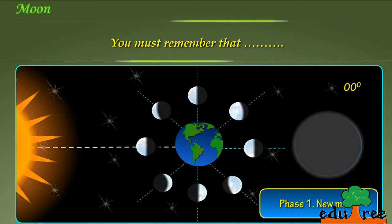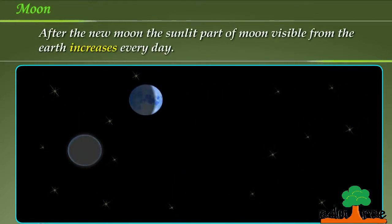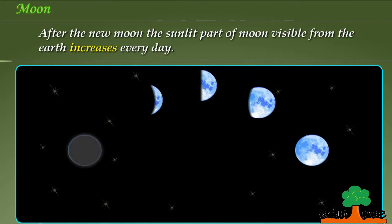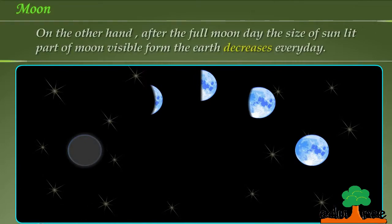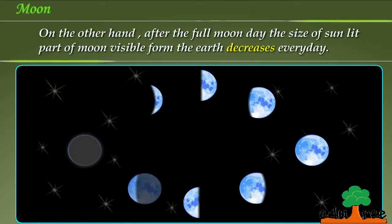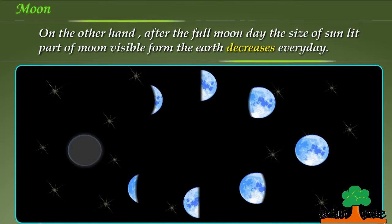You must remember that after the new moon, the sunlit part of moon visible from the earth increases every day. On the other hand, after the full moon day the size of sunlit part of moon visible from the earth decreases every day.